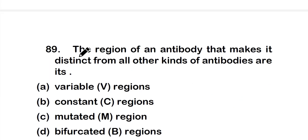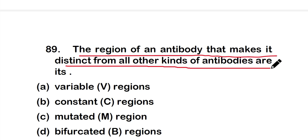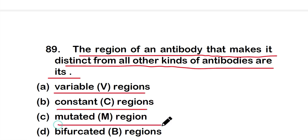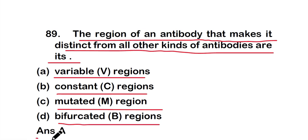Question number 89: The region of an antibody that makes it distinct from all other kinds of antibodies is its — option A: variable region, option B: constant region, option C: mutated region, or option D: bifurcated region. The right answer is option A — the variable region.